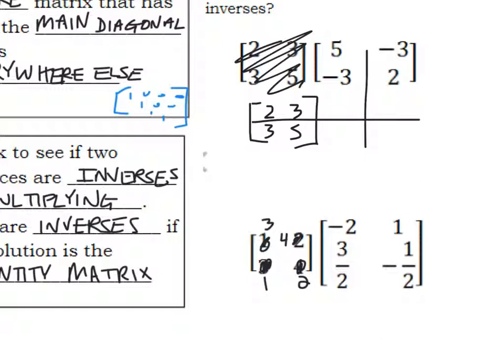So like we did last class, 2 times 5 is 10, and then 3 times negative 3 is minus 9. 2 times negative 3 is negative 6. 2 times 3 is 6. 3 times 5 is 15. 5 times negative 3 is minus 15. 3 times negative 3 is negative 9. And 5 times 2 is 10.